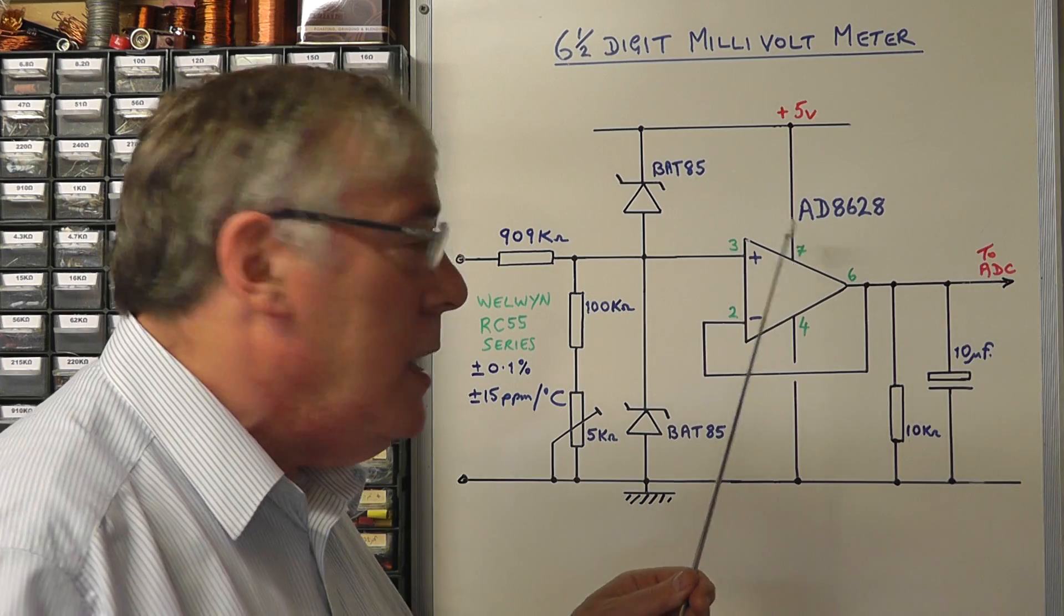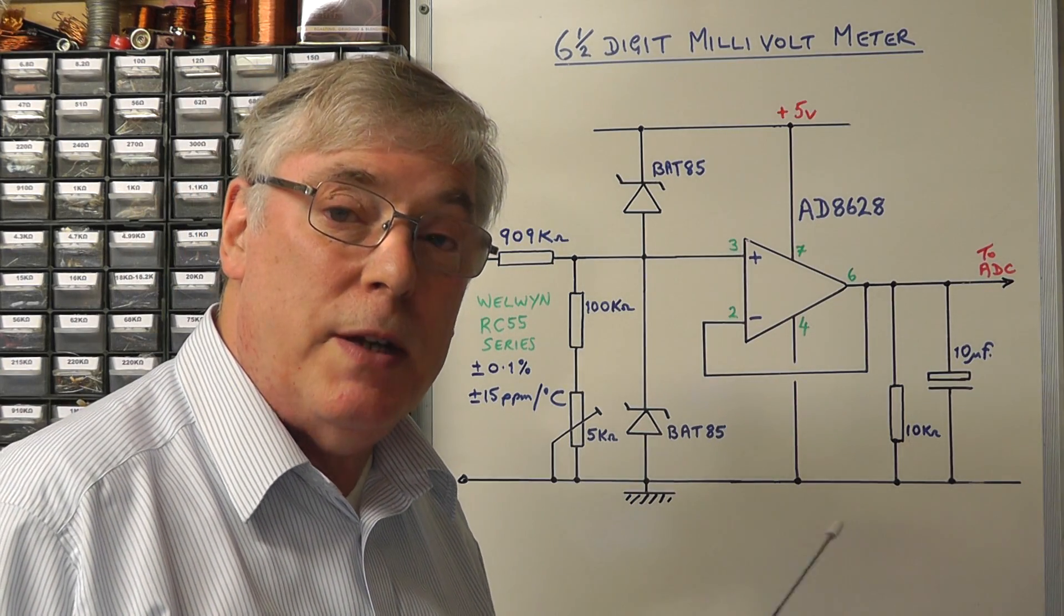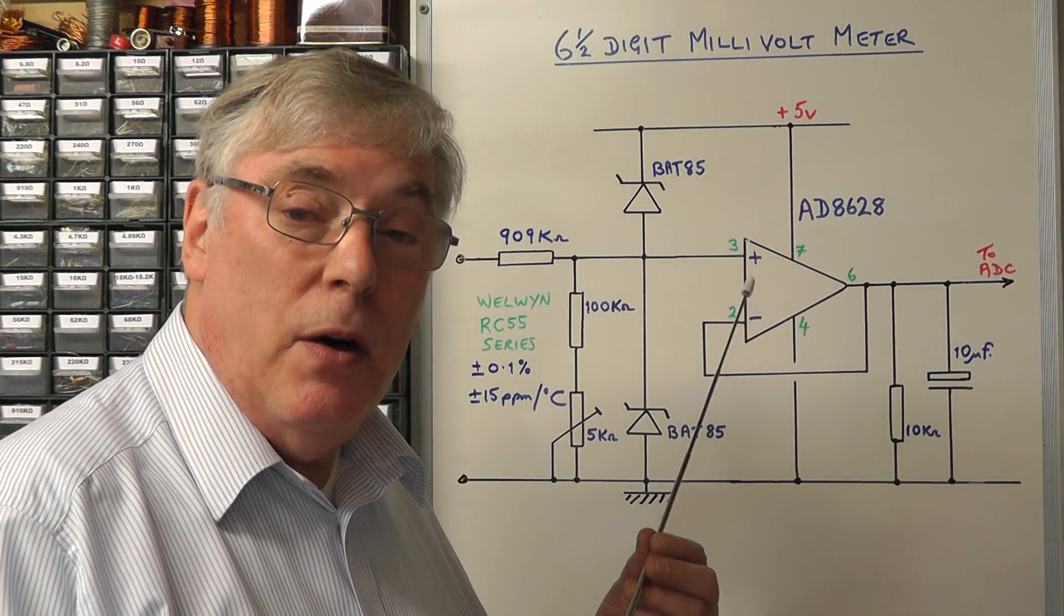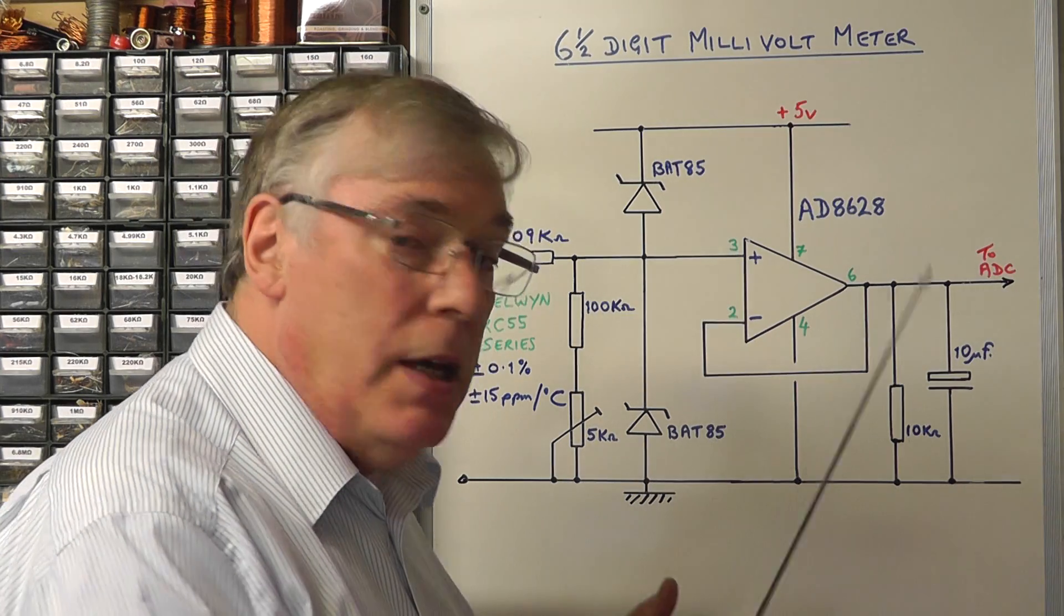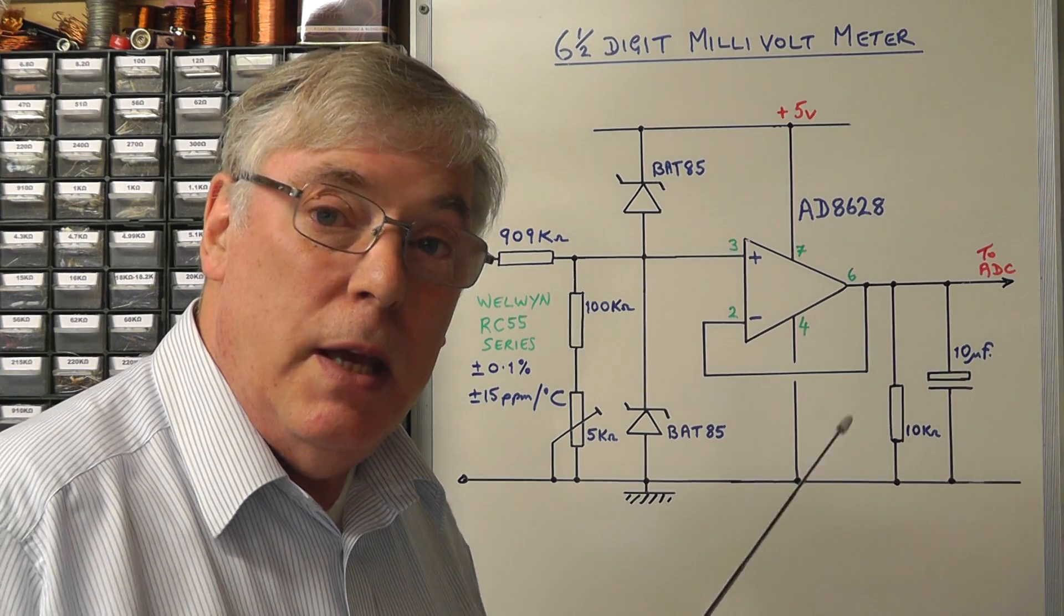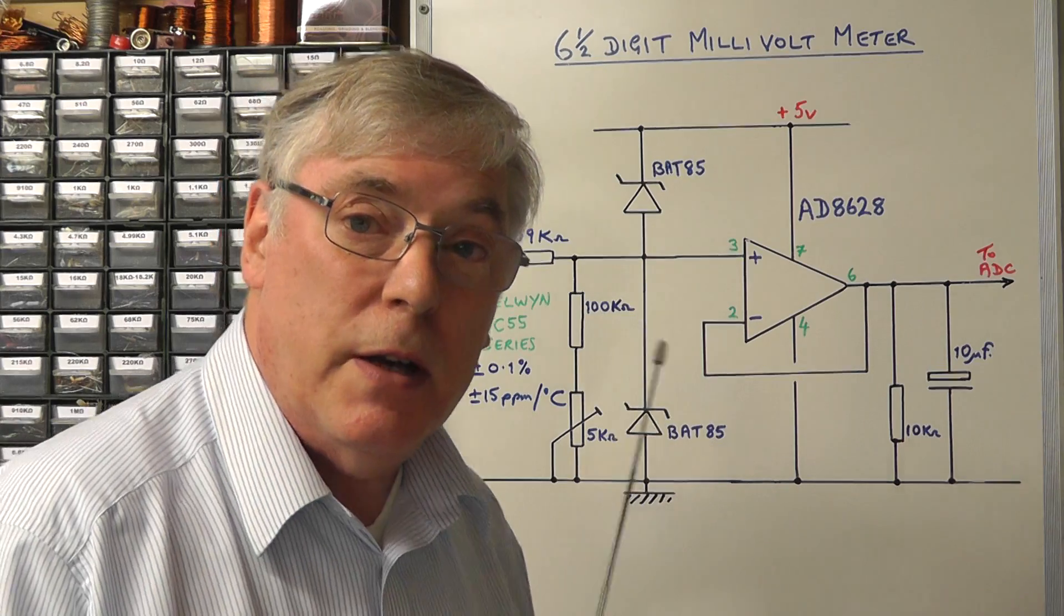The IC, the AD8628, is a straight drop-in replacement for the OP777 and it's also designed to operate on a single 5 volt supply. So that's the change we've made there. So what I'll do next is I'll just show you the operation of this now with those changes and show you the accuracy of it.